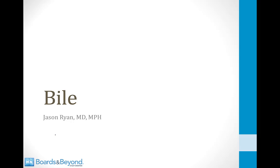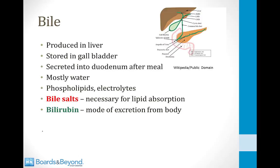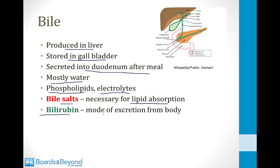Hello everyone and welcome to our module on bile. Bile is a substance that is produced in the liver, then stored in the gallbladder, and after a meal it is secreted into the duodenum to help us absorb fats. It's made up mostly of water but also contains phospholipids and electrolytes. From a physiology point of view, the two most important components of bile are the bile salts, which help to absorb lipids, and bilirubin, because bile is the main mechanism by which bilirubin is excreted from the body. I'll talk about bilirubin in a separate module. In this module I'm going to focus on bile in general and the bile salts.